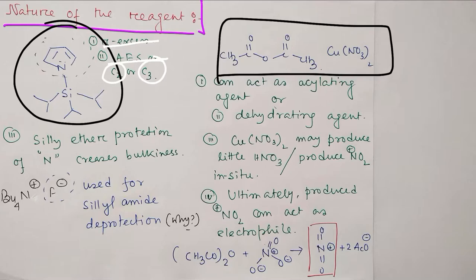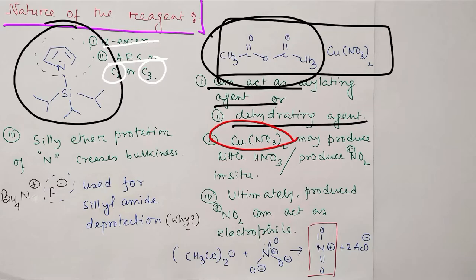Let's look at this example: acetic anhydride plus copper nitrate. This can act as an acylating reagent or as a dehydrating reagent.